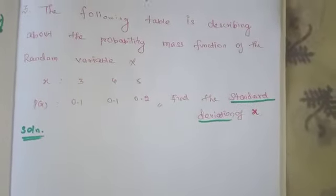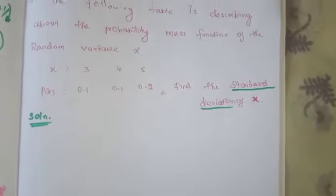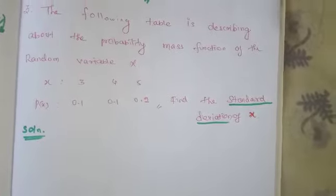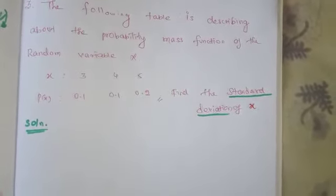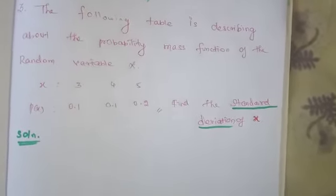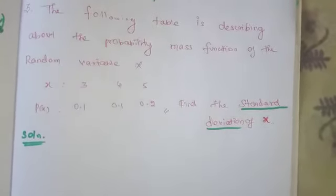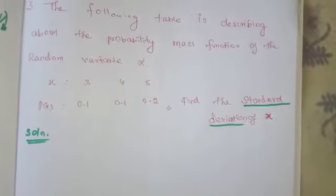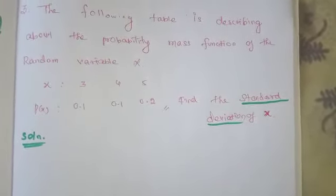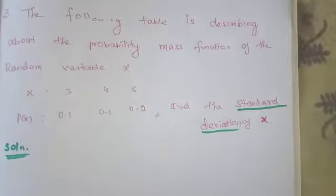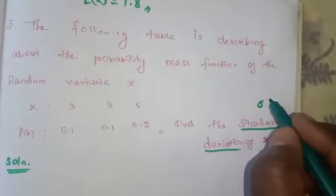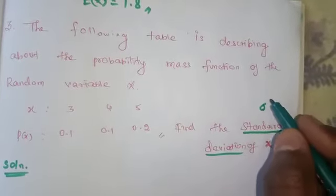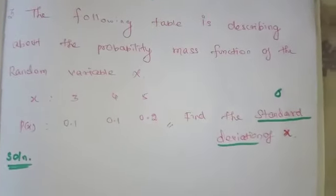Standard deviation is the square root of variance. Sigma square is variance, and sigma is standard deviation. So sigma is standard deviation and sigma square is the variance.